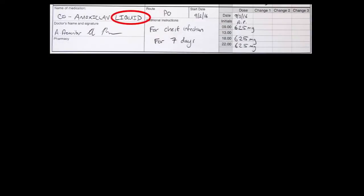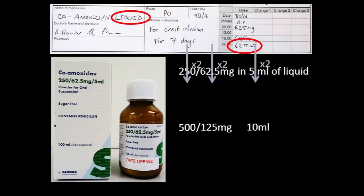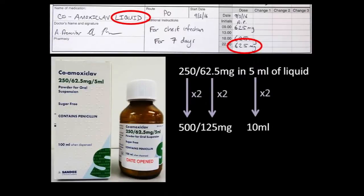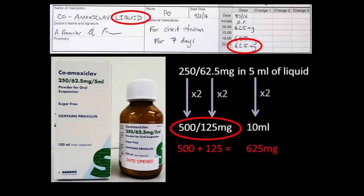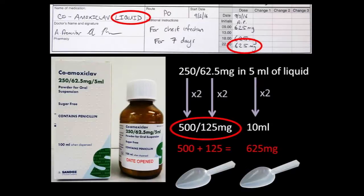Say we have a prescription for the liquid of 625 milligrams. In the previous example we multiplied everything by 2 to get a 10 millilitre dose, which gives 500 and 125 milligrams of the two ingredients. If you add 500 and 125 together you get 625 milligrams. So again the correct dose to give for this prescription would be 10 millilitres, or 2 of the 5 millilitre spoons.